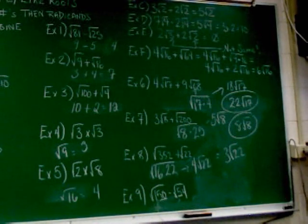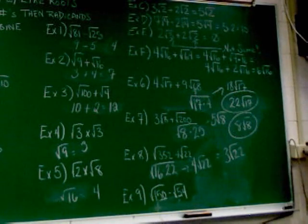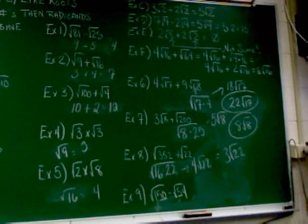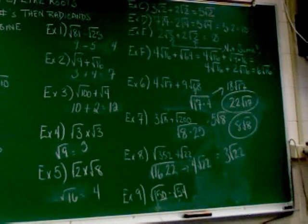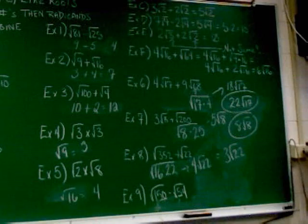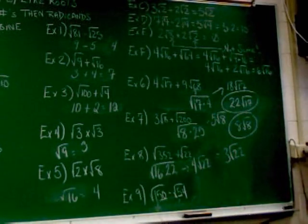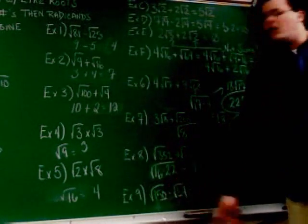Now, if you look at the last one, 54 doesn't go into 150. What's the deal? It can also happen that you have to change both of them, which is the trickiest of all. What do we know about 54? We know 54 is 1 times 54, 2 times 27. But the one that's going to do us the most good is 9 times 6. Why 9 times 6? The square root of 9 is a perfect square. So, you're looking for perfect squares. This is going to work out to be 9 times 6.